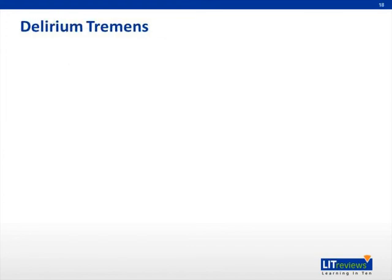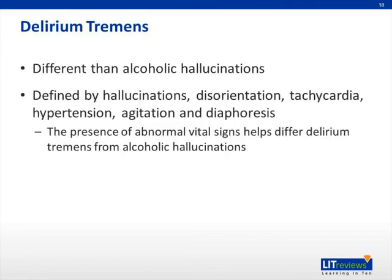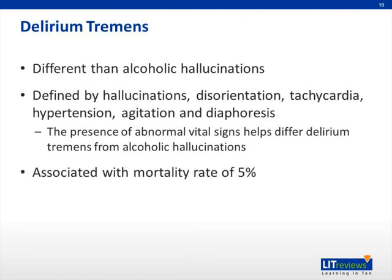Delirium tremens are different than alcohol hallucinations. Delirium tremens is defined by hallucinations, disorientation, tachycardia, hypertension, agitation, and diaphoresis in the patient who has not been drinking. The important distinction between alcohol hallucinations and delirium tremens is that delirium tremens patients will exhibit abnormal vital signs. Patients suffering from delirium tremens have an approximated 5% mortality.